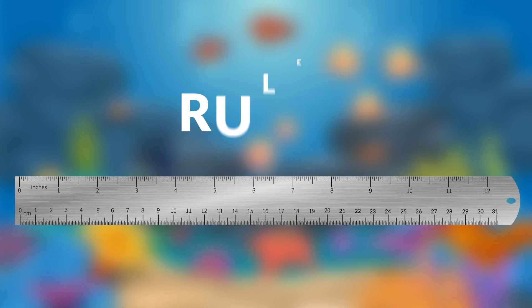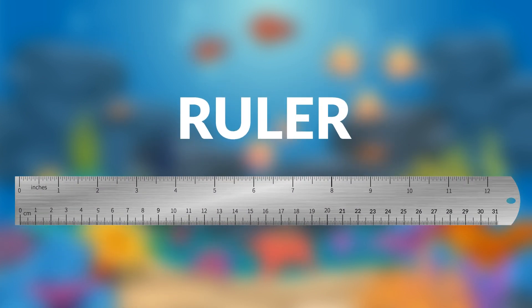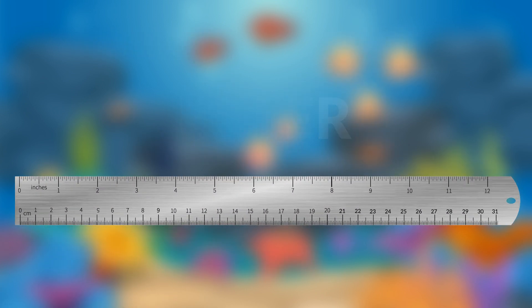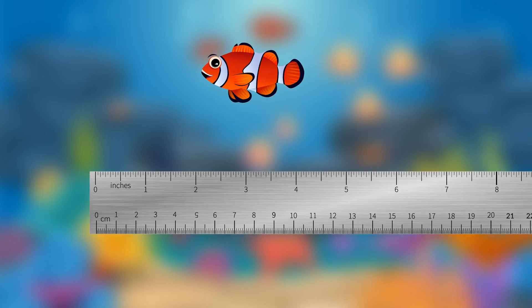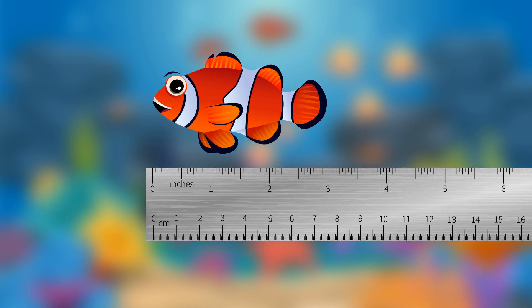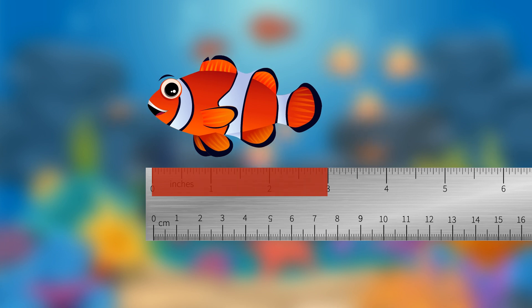We can measure in standard units with a ruler. Count from the hash mark at 0 to the hash mark where the object ends to find out how long something is. Check out this clownfish. It is 0, 1, 2, 3 inches long.